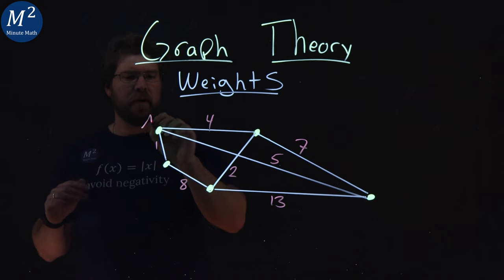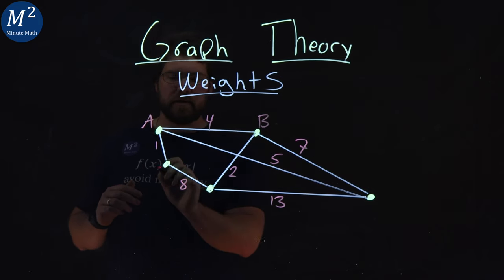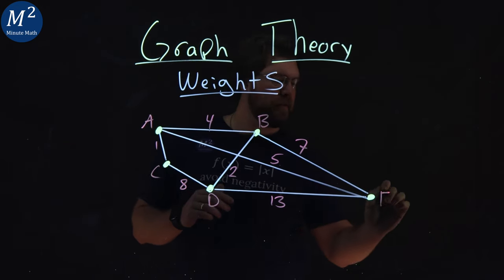We can label our vertices if you want: A, B, C, D, and E.